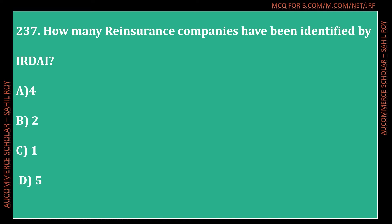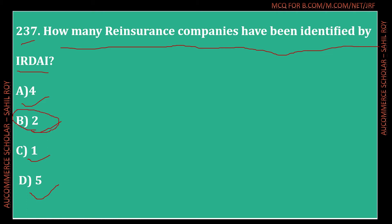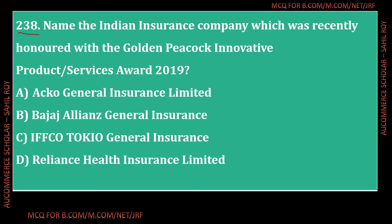Question number 237: How many reinsurance companies have been identified by IRDAI in India? Options: 4, 2, 1, or 5 companies. The correct answer is Option B - 2 companies. IRDAI has identified two reinsurance companies in India: ITI Reinsurance Limited and General Insurance Corporation of India.